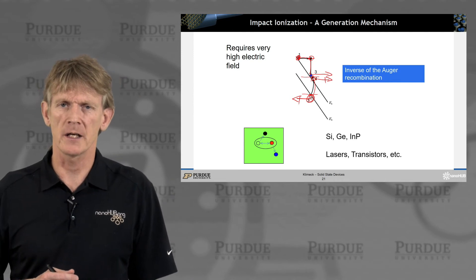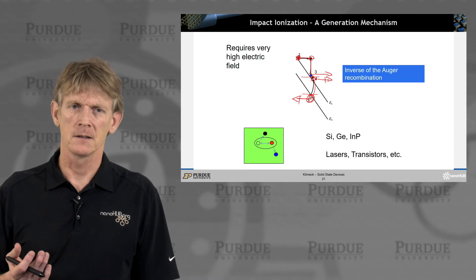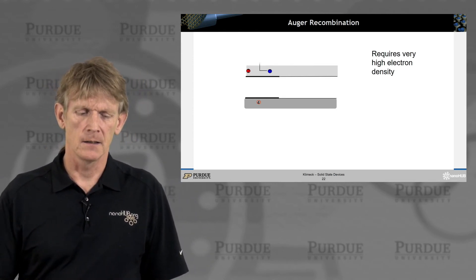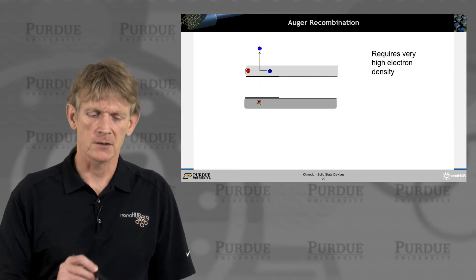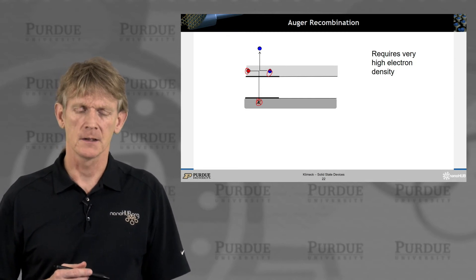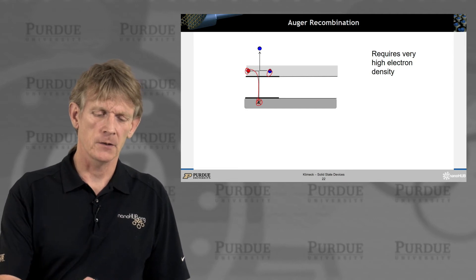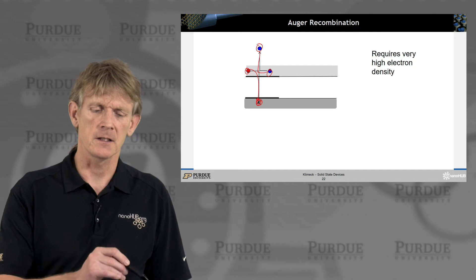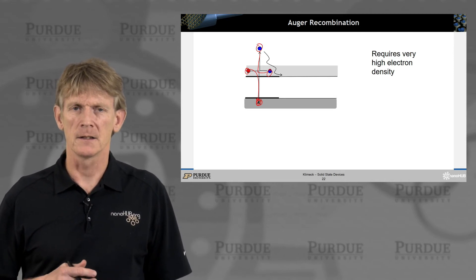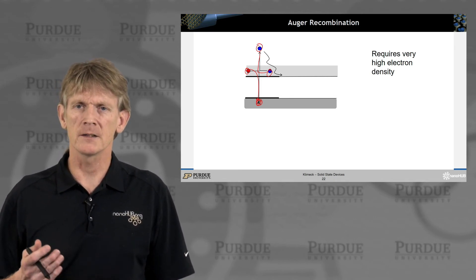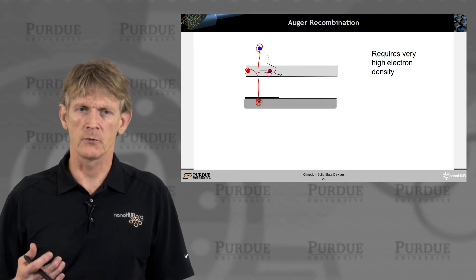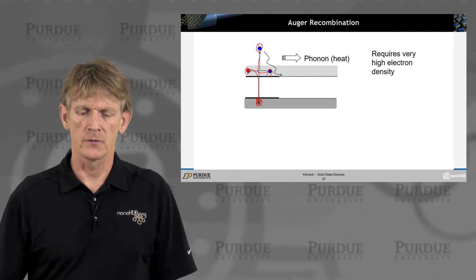So impact ionization, its counter process is the Auger recombination. And it looks like this. So imagine that you have two electrons that are in the conduction band, like this, and you have a hole in the valence band. Again, three particles are involved. That's how we start. And the two electrons collide, and one electron is annihilated by a hole, the other one picks up the extra energy and is getting kicked up in energy. And eventually that electron will decay with phonon scattering that loses energy to phonons and thermal vibration. So this requires very high electron density, lots of electrons being around and being willing to collide with each other. So you need to increase the relative rate of these collisions, so the density of electrons needs to be very high.